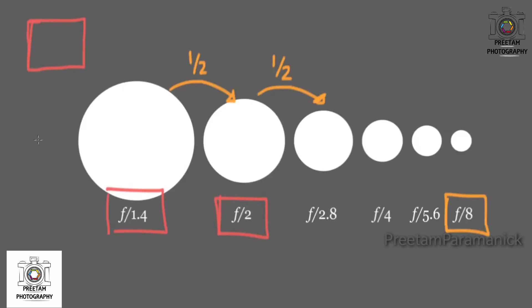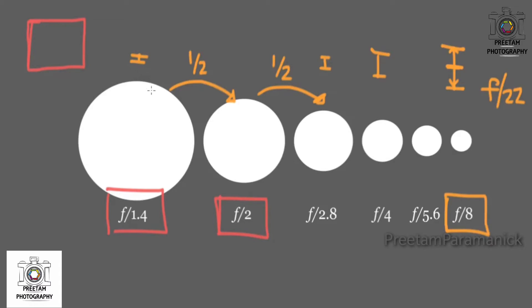That's why aperture will affect our metering and exposure lessons later in the course. The important thing to know is that as you move towards f22, you have less light coming into the lens, but as a result you see more things in focus. At f1.4 you have a very shallow field of focus, at f2.8 it's a bit more, at f4 a bit more, and at f8 you have a much deeper field of focus.